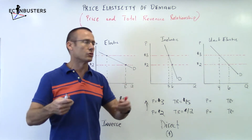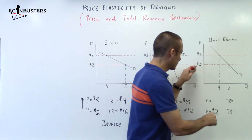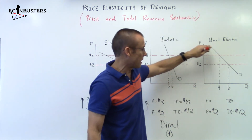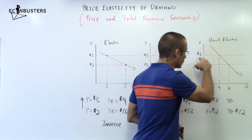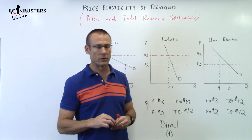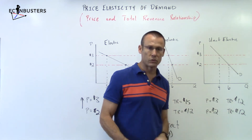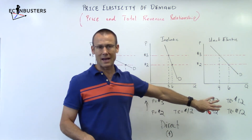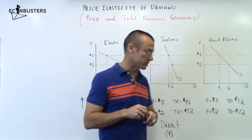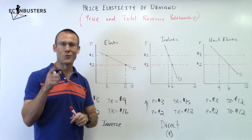This makes sense: if they're inelastic and we raise the price, they continue to buy the good. The percent change in QD is less than the percent change in price, so total revenue goes up. Finally, unit elastic: at a price of two dollars they're buying six — two times six is twelve dollars. We raise the price to three dollars, they're buying four — three times four is also twelve dollars. Raise the price, total revenue stays the same. Lower the price, total revenue stays the same. That's unit elastic — no relationship between price and total revenue.